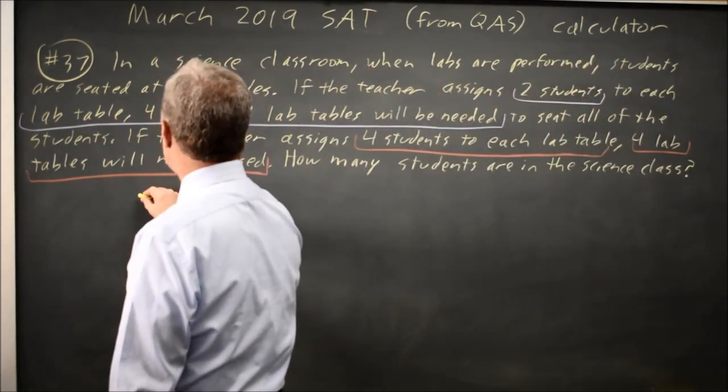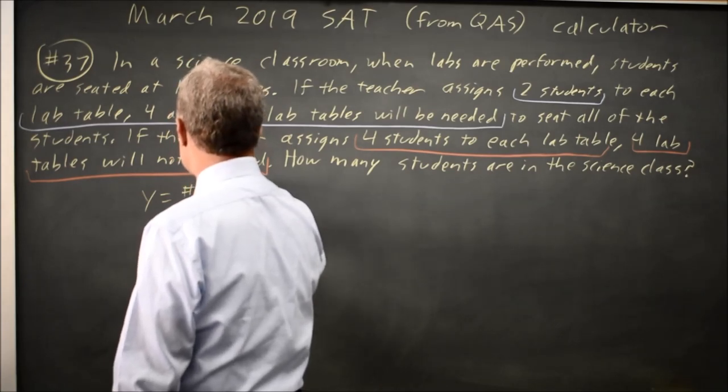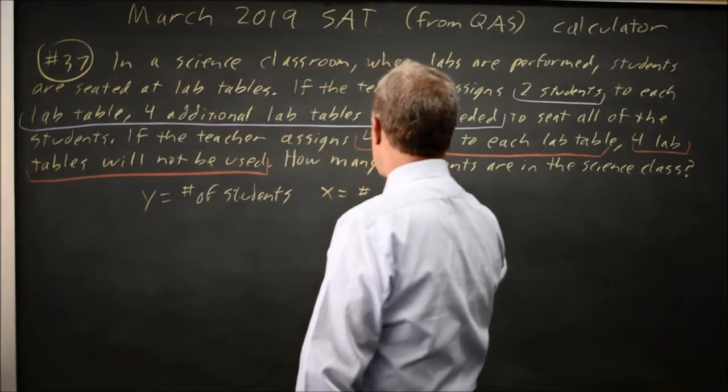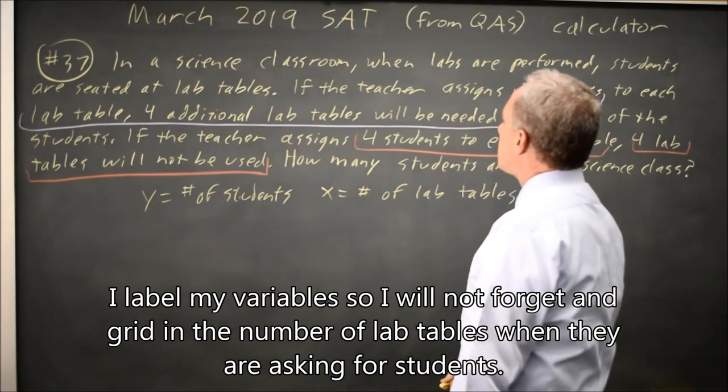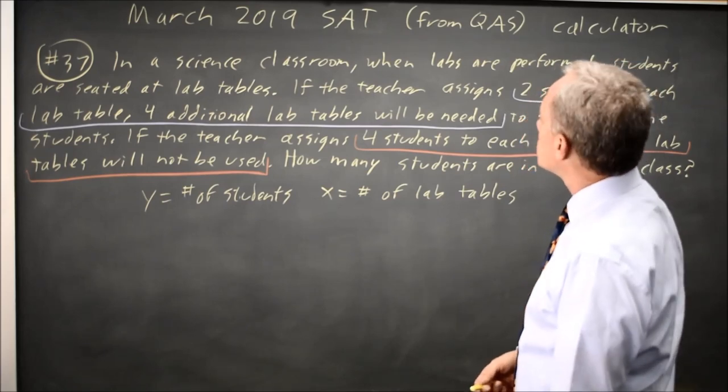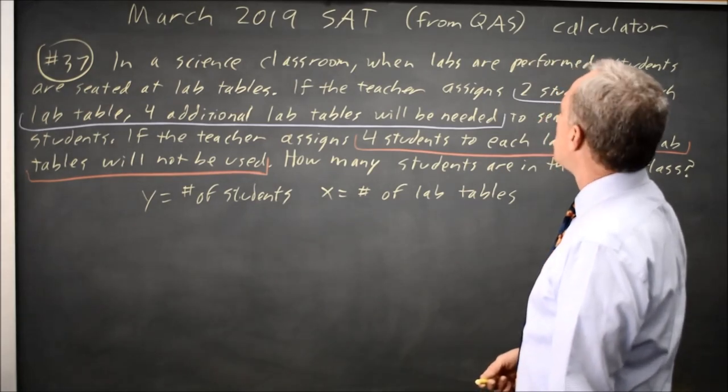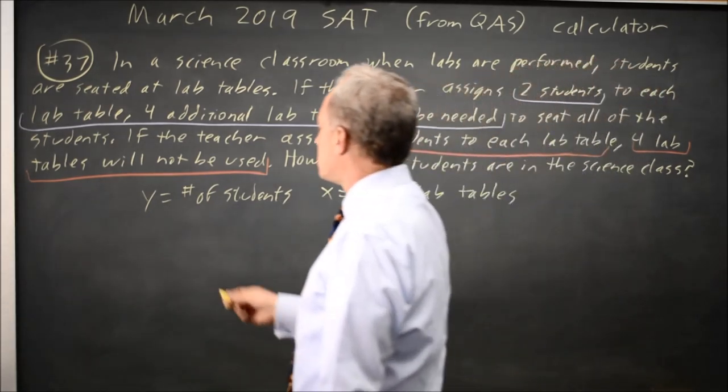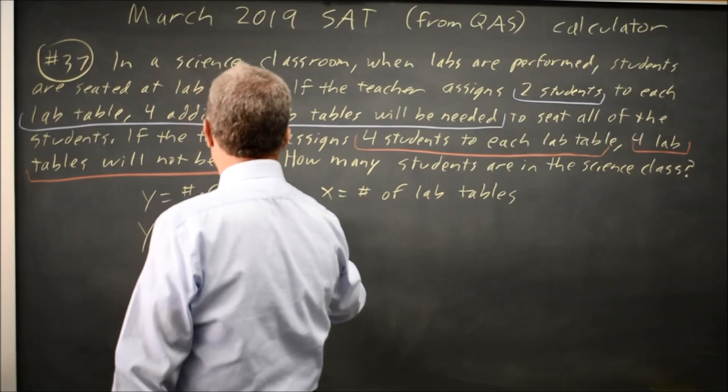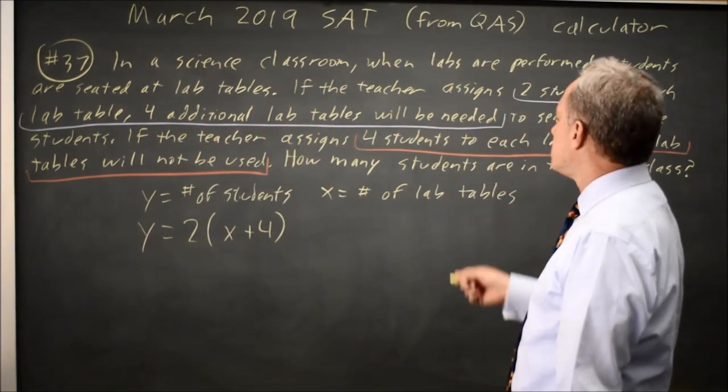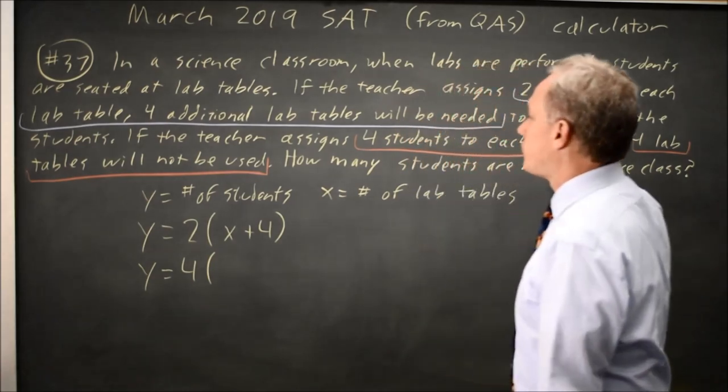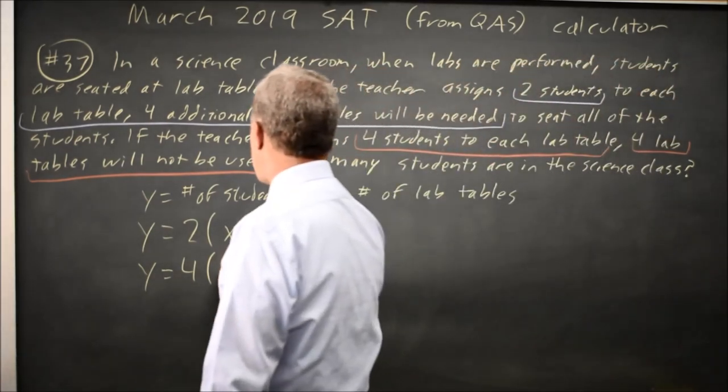I'm going to use y equals number of students, and x equals number of lab tables. Two students per lab table, I'll need four additional lab tables. So y, the total number of students, is two times the number of lab tables, x, but I need four additional ones. So y equals 2(x+4). The second statement: the total number of students is four times the used tables. So that's y equals 4(x-4).